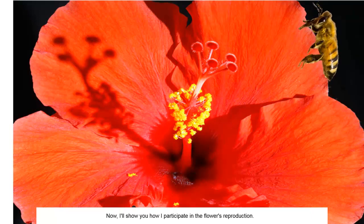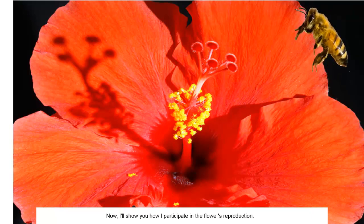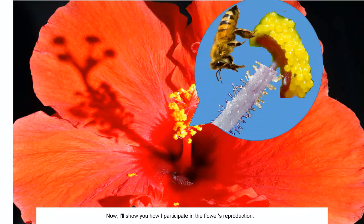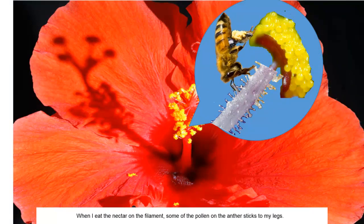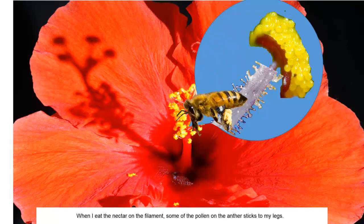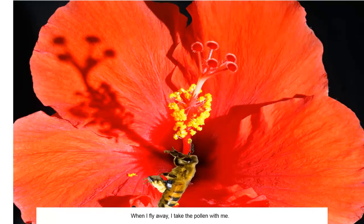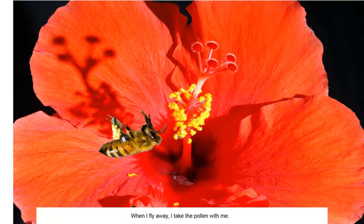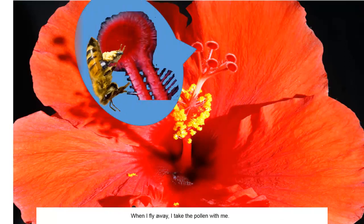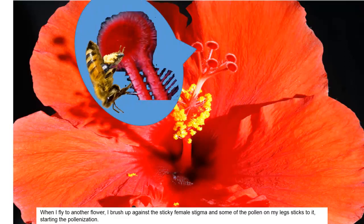Now I'll show you how I participate in the flower's reproduction. When I eat the nectar on the filament, some of the pollen on the anther sticks to my legs. When I fly away, I take the pollen with me. When I fly to another flower, I brush up against the sticky female stigma, and some of the pollen on my legs sticks to it, starting the pollination.